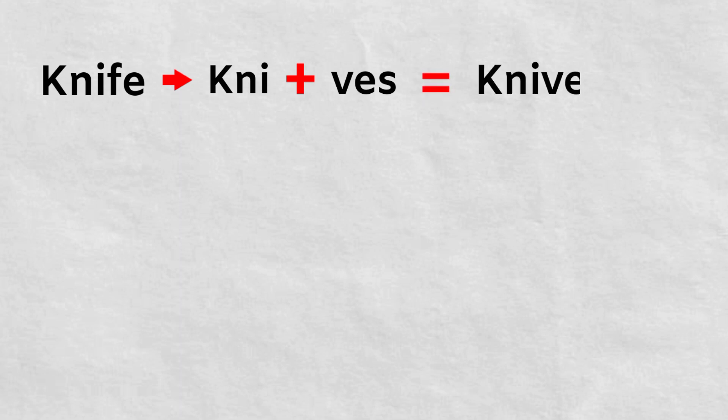Look at the last alphabets of knife. It is FE. So what will we do? We will remove the FE and we will add VES. So we will get K-N-I-V-E-S. This is the plural form of knife.